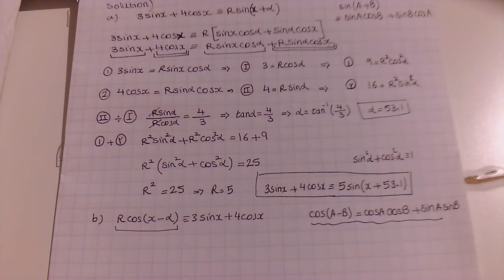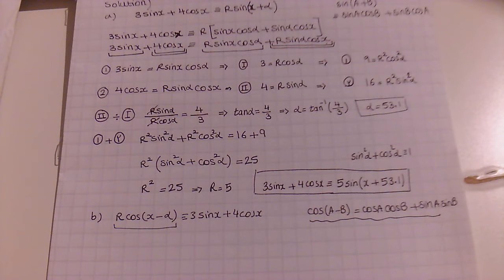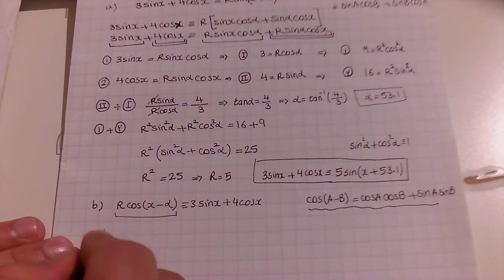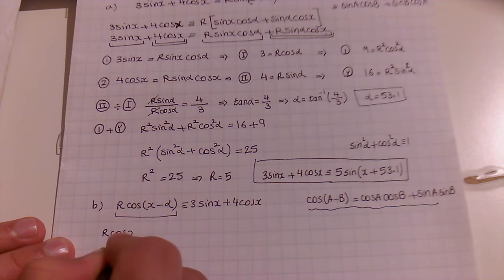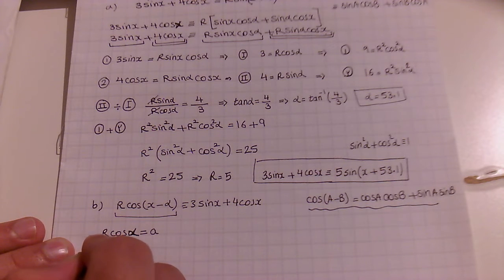Finally, we can say 3·sin(x) plus 4·cos(x) is identical to R·sin(x + α), where R equals 5 and α equals 53.1 degrees. That is the end of example 14, part A.